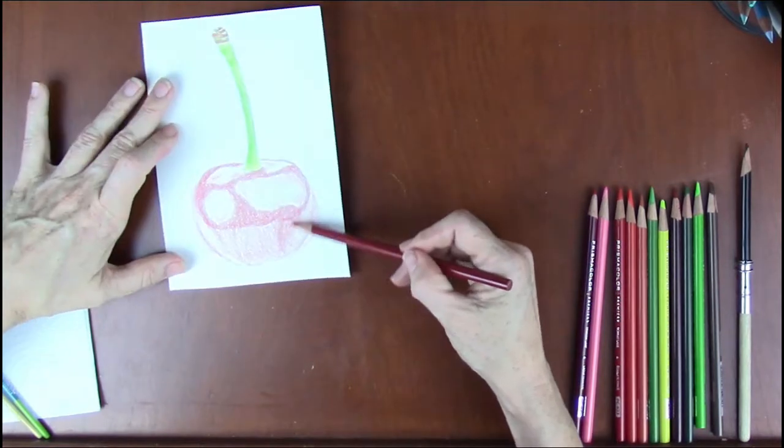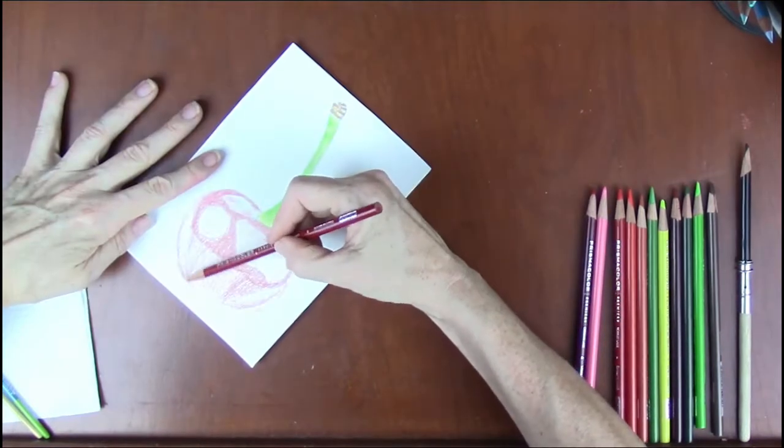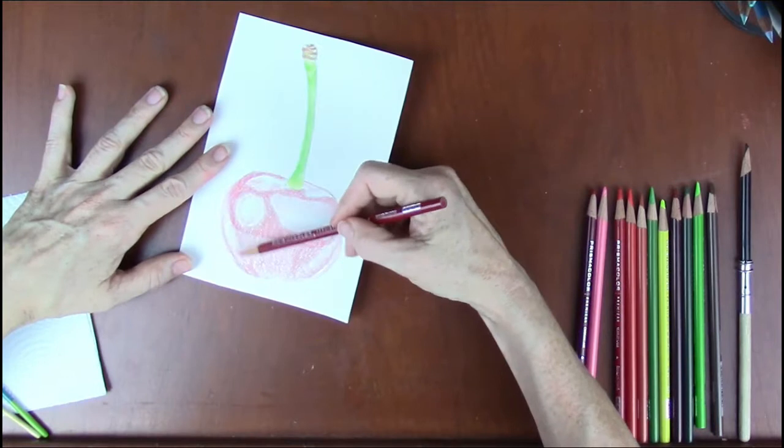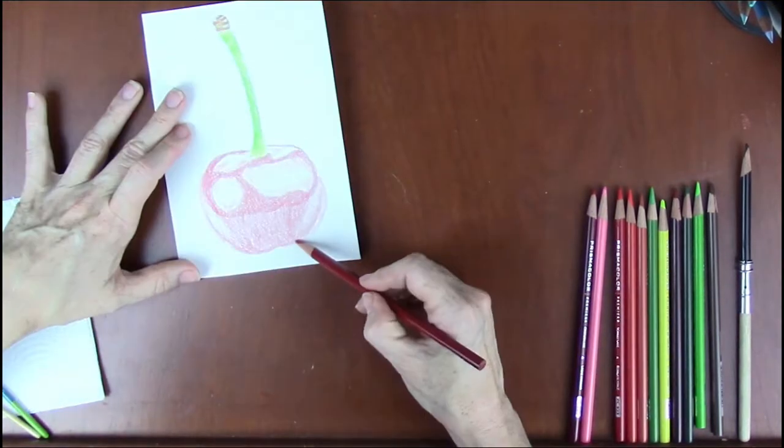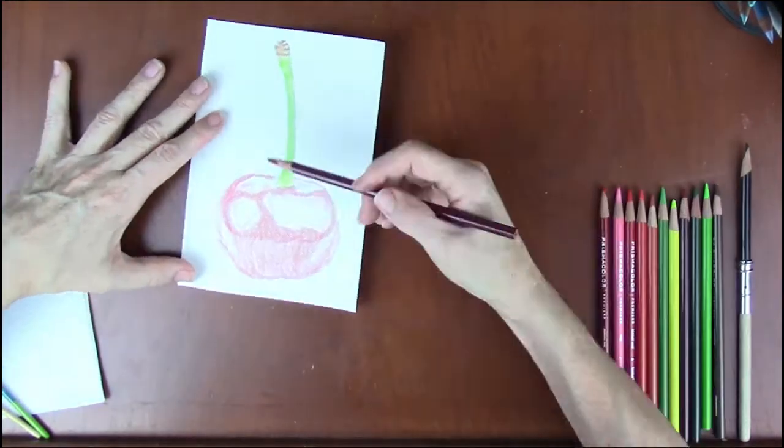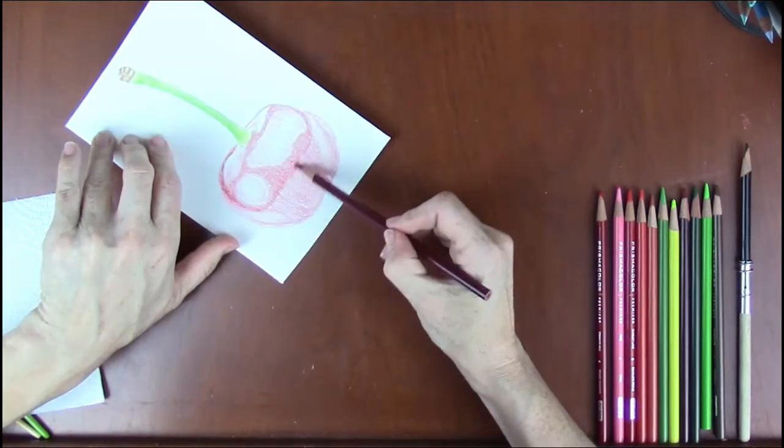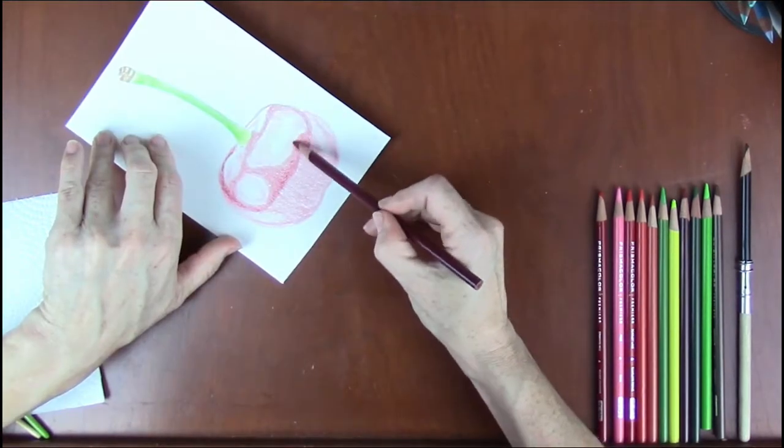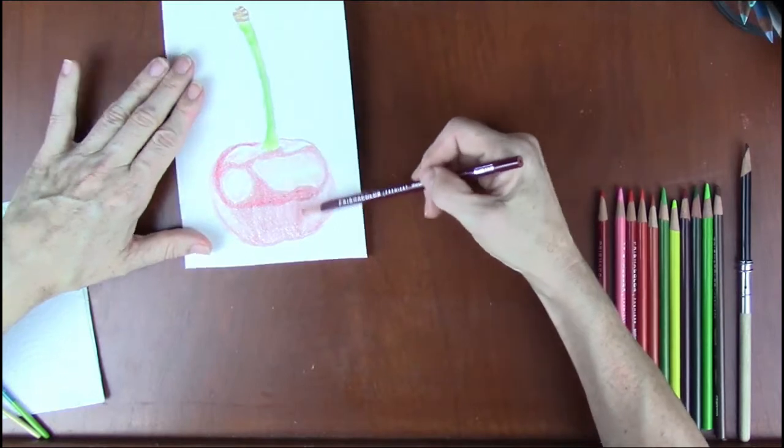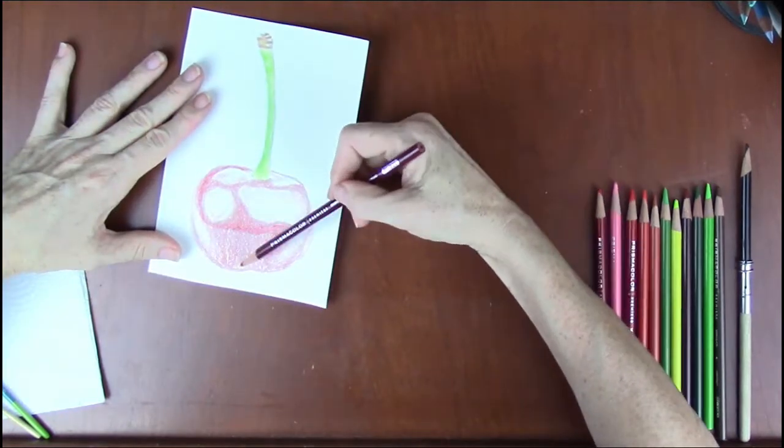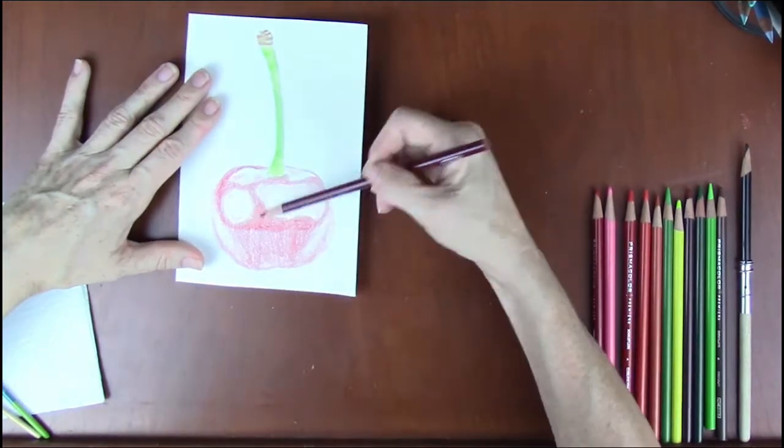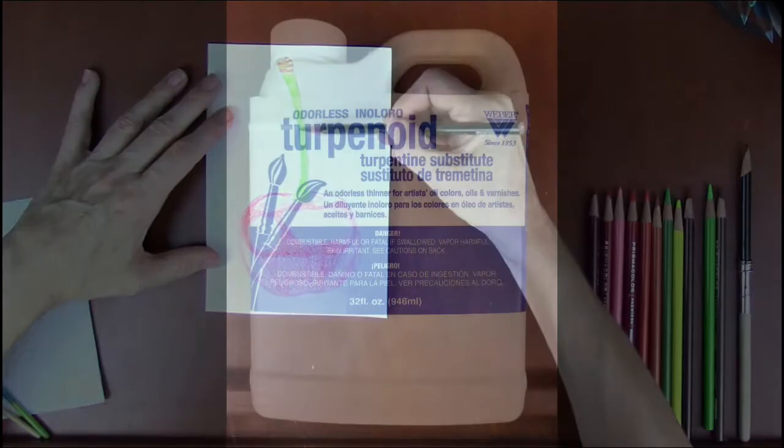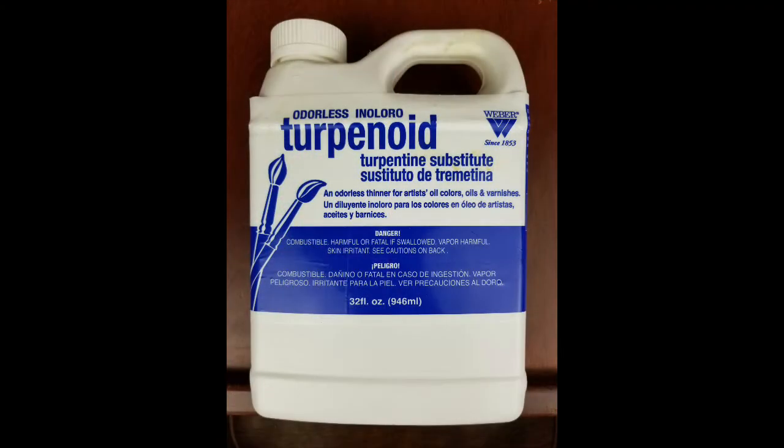We want nice, even and light, consistent layers before we put our solvent down. You can use any solvent that you like. Some people use Zest-it and other people use Gamsol. The one I had lying around my studio is an odorless mineral spirit called Turpenoid.